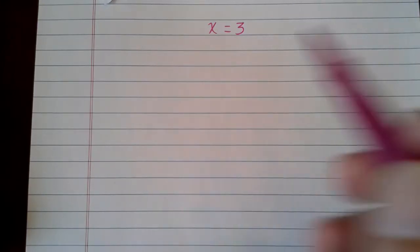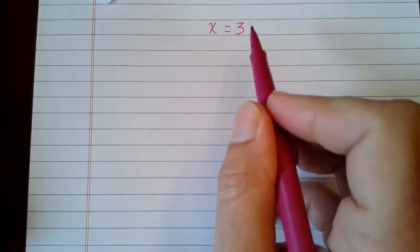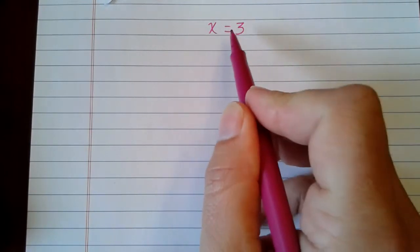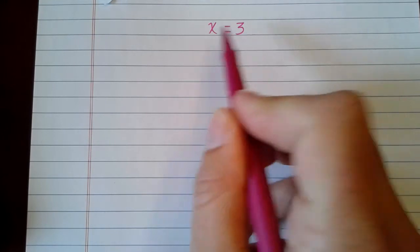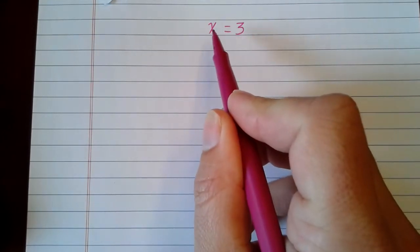All right, so check this out. I'm going to start with a very basic equation that says x equals 3. So x is 3. I can replace x with 3 and it will be a true equation. That's the only number I can replace x with.